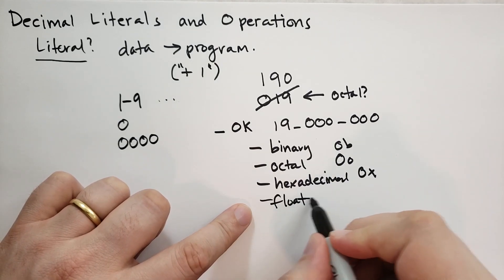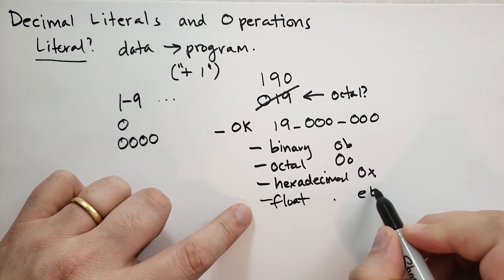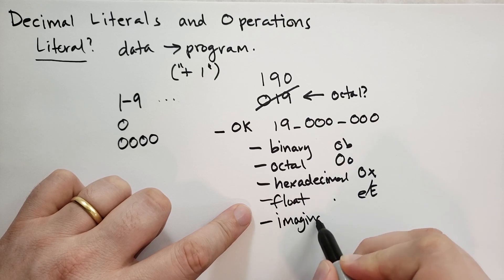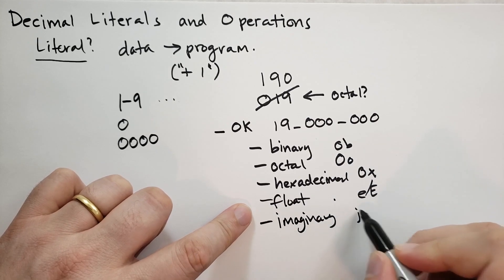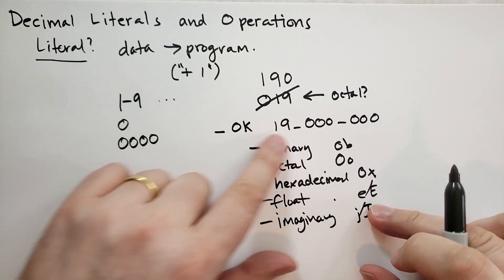Then there's going to be floating point literals. These have a dot in them or a period or an E or a capital E. And then there's also imaginary literals. These have a J at the end. So, as long as you don't do any one of these three things, you're going to have yourself a decimal literal.